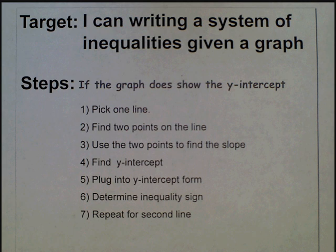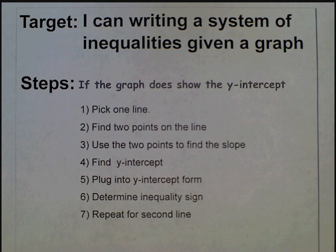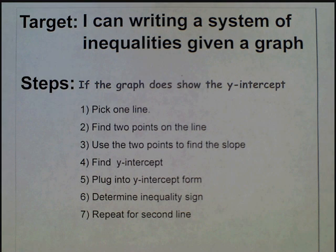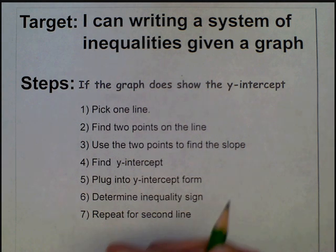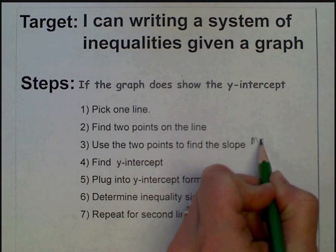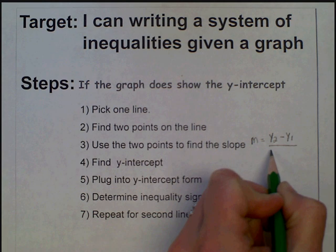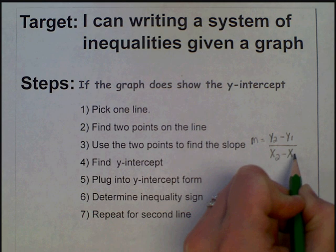I gave you two sets of steps because sometimes you're going to be able to see the y-intercept on the graph, and other times you're not. If you can see the y-intercept, first pick one line, find two points on that line, and use those two points to find the slope — using the slope formula or the slope triangle. Remember, the slope formula is y2 minus y1 divided by x2 minus x1.